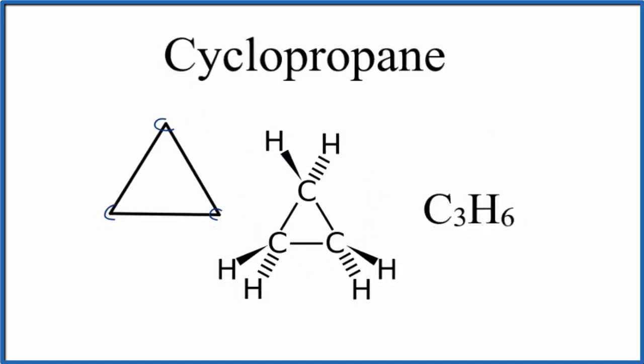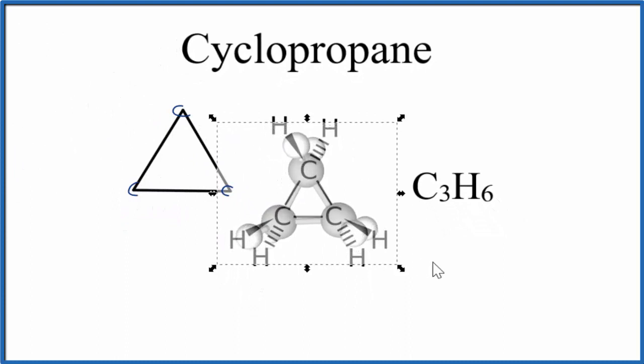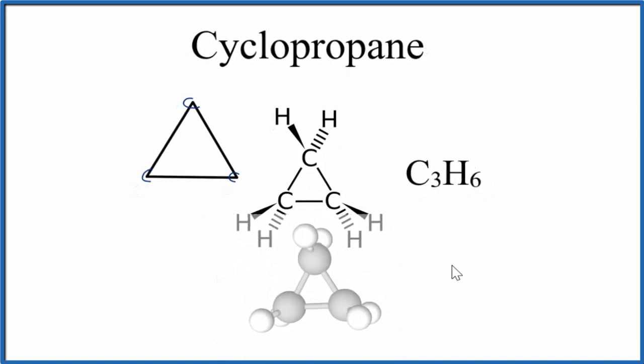If we looked at this in three dimensions, a molecular model of cyclopropane, that would look like this. So you can see there how those carbons are bonded together, and we have the hydrogen atoms around it.